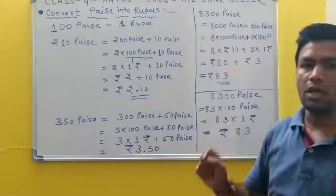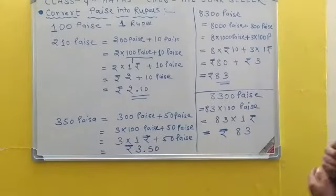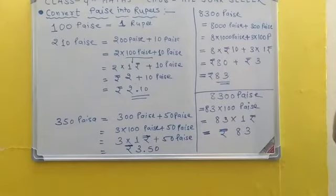Convert 10 Rupees. 3 into 10 Rupees plus 3 into 1.